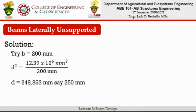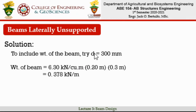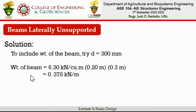Since we only considered the applied load, we need to account for the beam's self-weight. We adjust the depth from 250 mm to 300 mm to accommodate this. First, we calculate the uniformly distributed load caused by the beam's weight: 6.30 kN/m³ multiplied by the cross-section (0.20 m × 0.30 m) gives a self-weight of 0.378 kN/m.